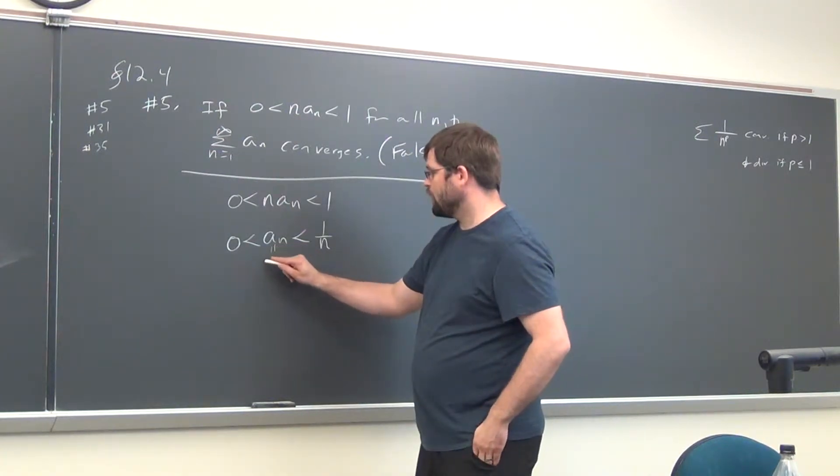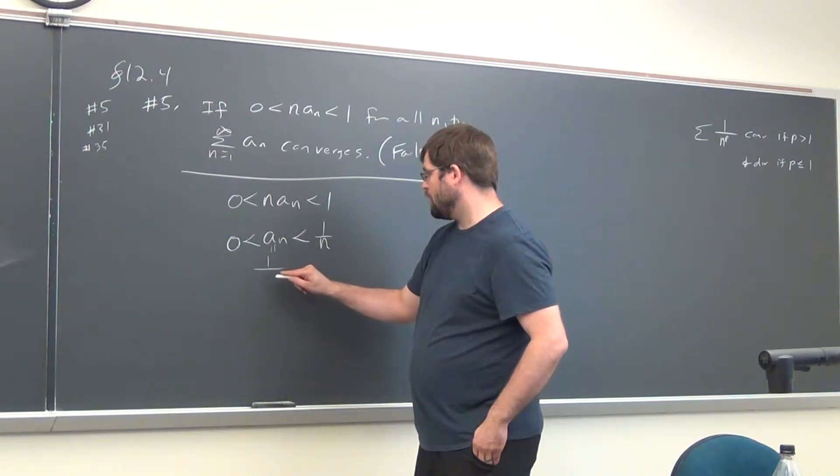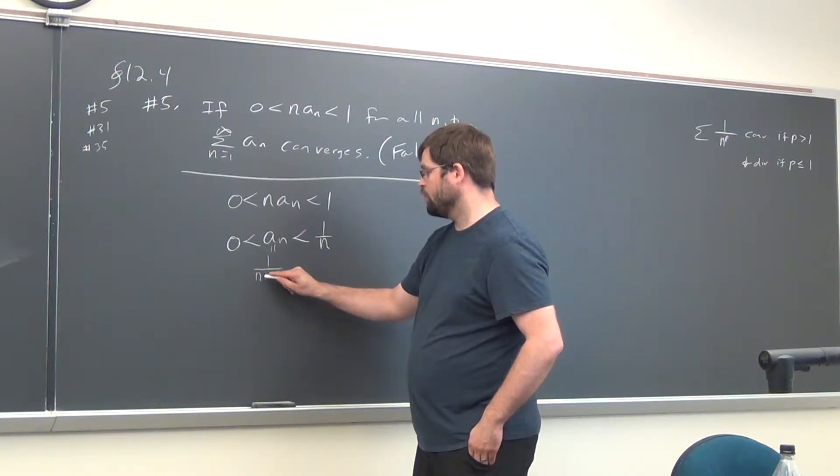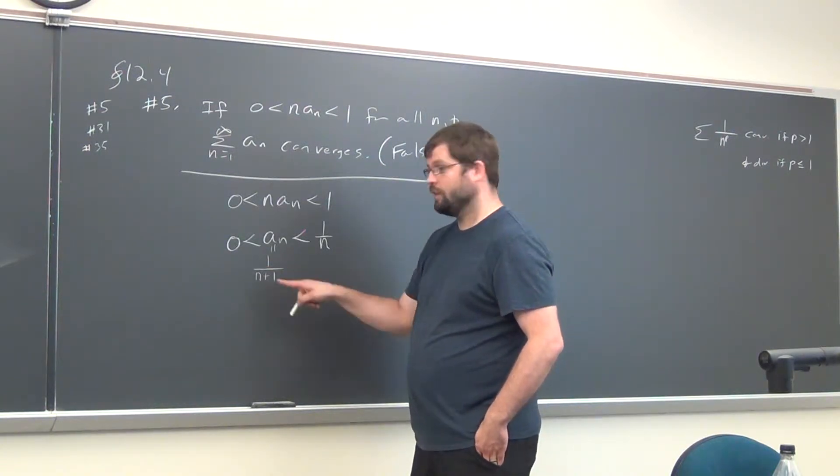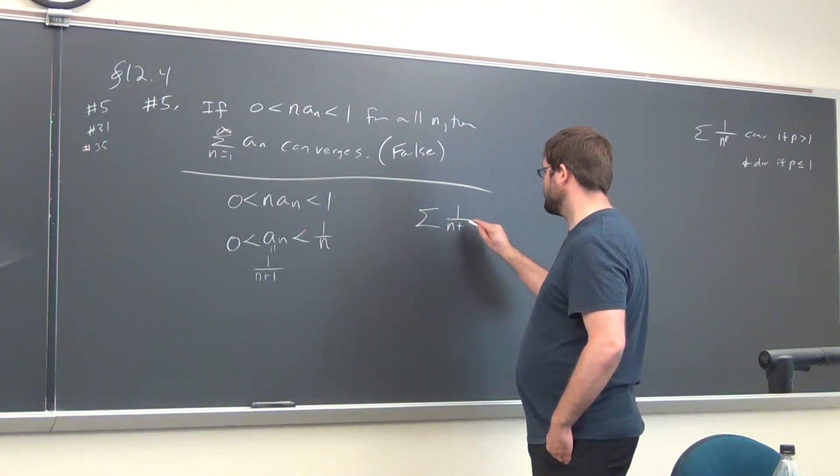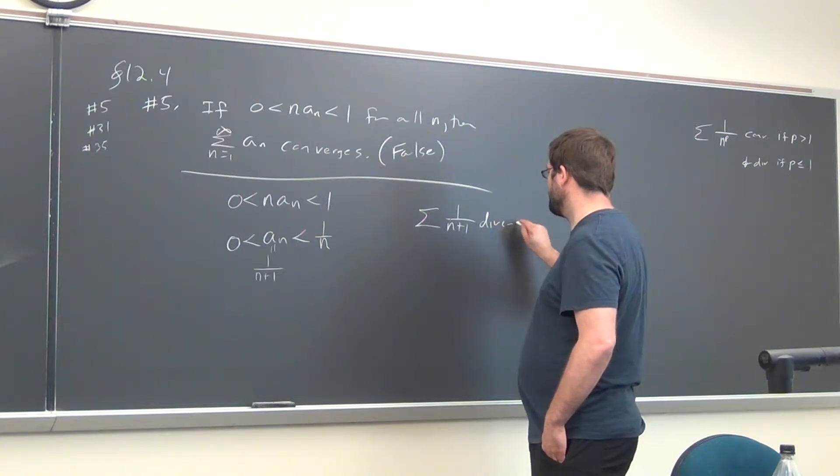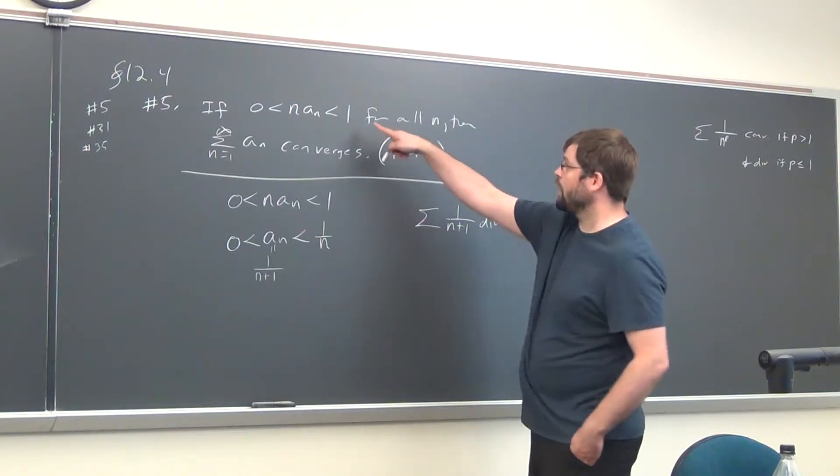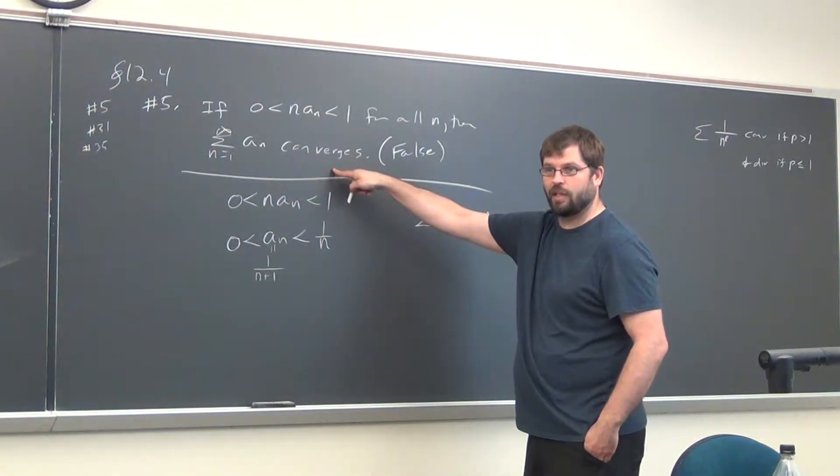If you just pick this to be 1 over n plus 1, that's smaller than 1 over n, but that sum diverges. So it's not true that this being true makes that converge.